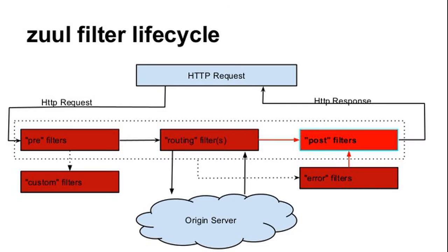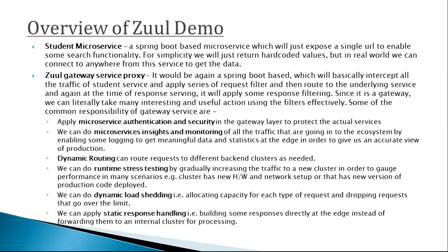First are the pre-filters — these are invoked before the request is routed. Second are the post filters — these are invoked after the request has been routed. Third are the route filters — these are used to route the request. Fourth are the error filters — these are invoked when an error occurs while handling the request.